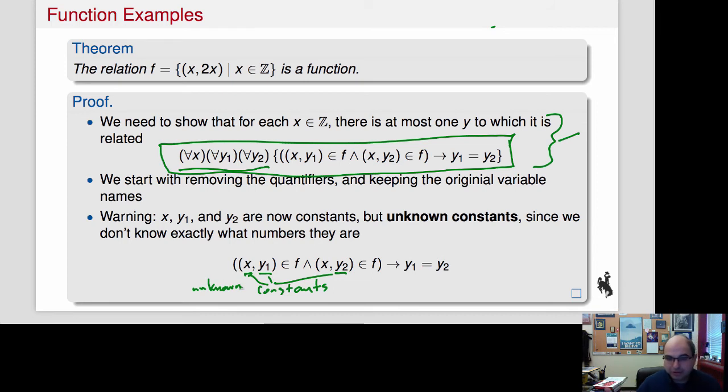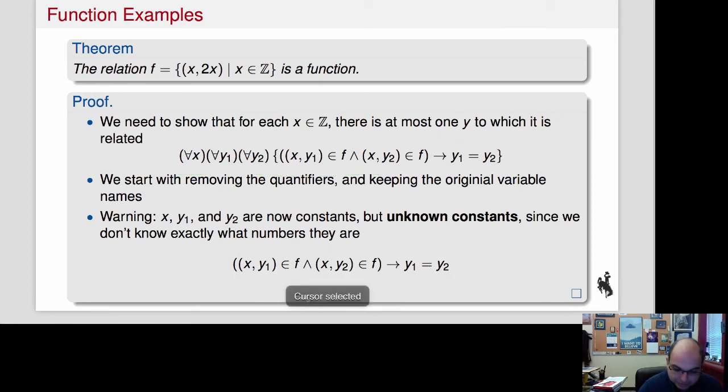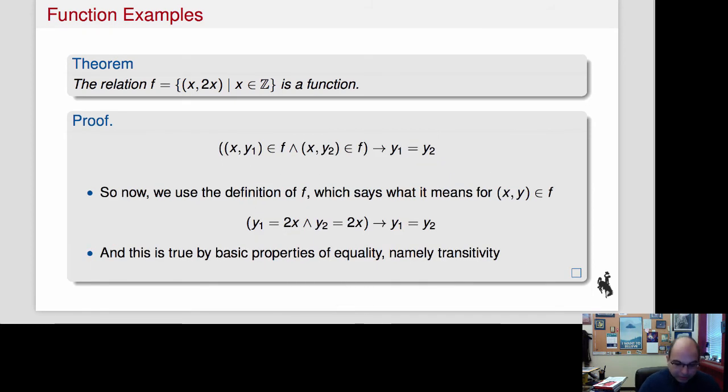They're not variables, they're constants, which means that they're numbers. I don't know what number they are, so I usually call them unknown constants, just to emphasize that I don't know what constant it is. But it could be that it's equal to 1, it could be equal to 10 million—I just don't know. So now here is the statement that we have to prove.